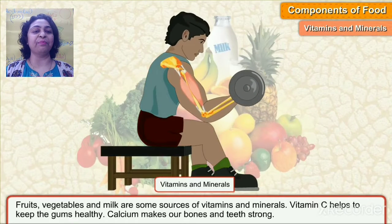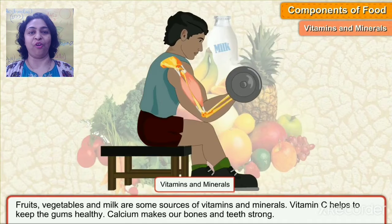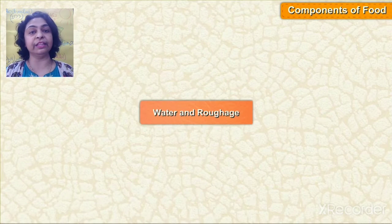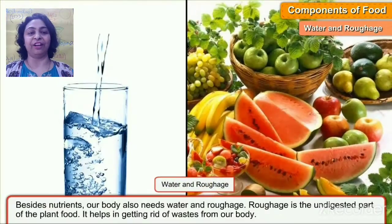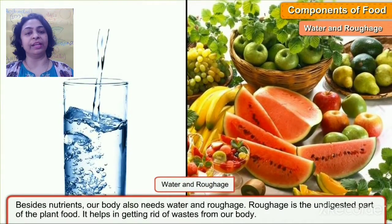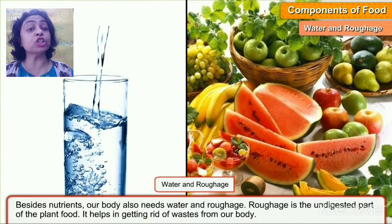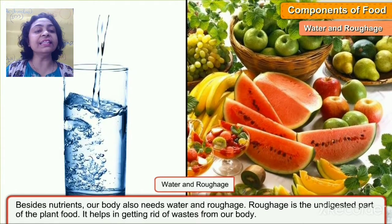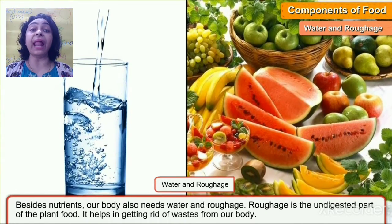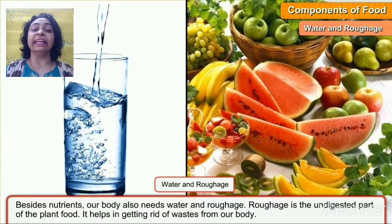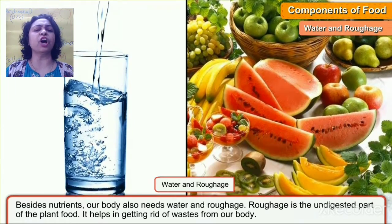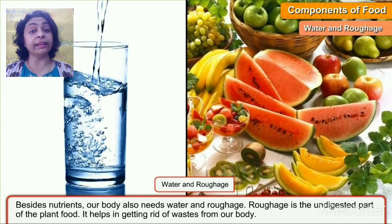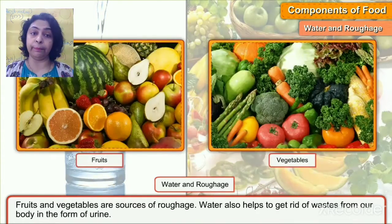So vitamins and minerals are very important for health. Besides nutrients, our body also needs water and roughage. Roughage is the undigested part of our plant food. It helps in getting rid of waste from our body, so water and roughage are equally important.